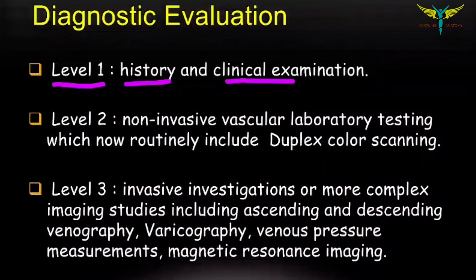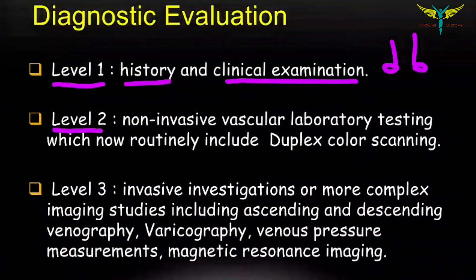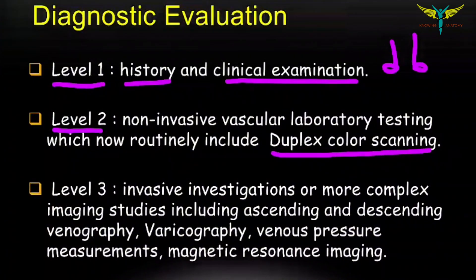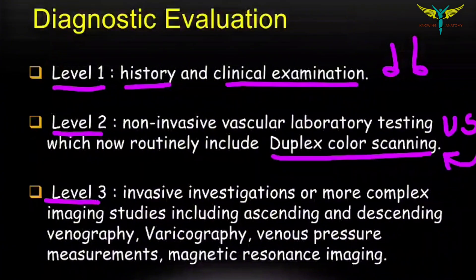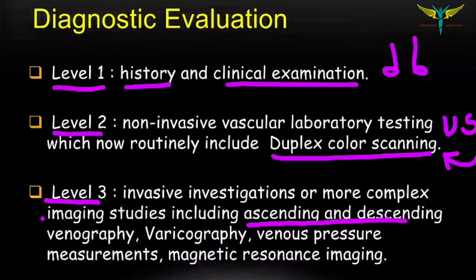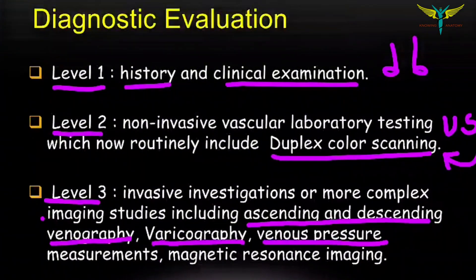To find out if it is a venous ulcer, we should do some tests. The basic Level 1 tests involve taking histories and clinical examination of the lower limb. Level 2 involves non-invasive vascular lab testing — that is duplex color scanning, an ultrasound-like test which detects venous insufficiency.